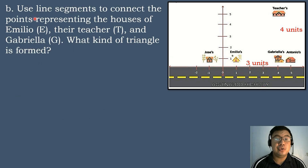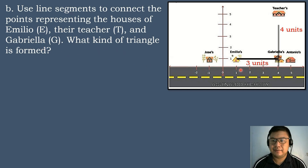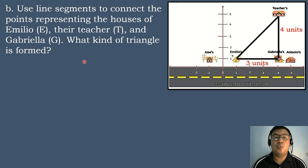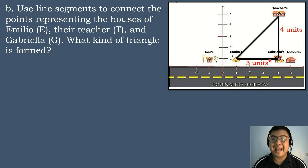Next, use line segments to connect the points representing the houses of Emilio, their teacher, and Gabriela. After connecting them, what kind of triangle is formed? Obviously, we have formed a right triangle — a triangle which has an angle of 90 degrees, or a right angle.